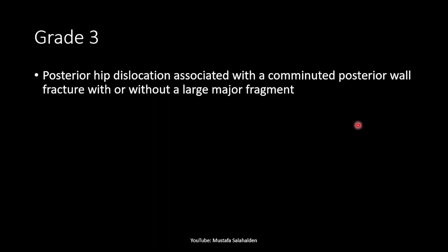In grade 3 there is a posterior hip dislocation associated with a comminuted posterior wall fracture, with or without a large major fragment. This drawing shows there is a large fracture with comminuted fragments, along with the posterior hip dislocation.